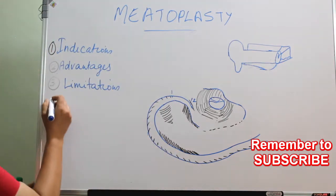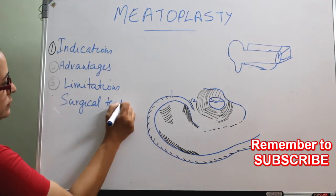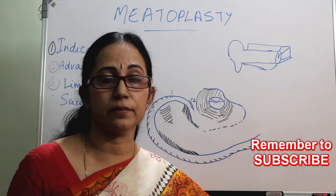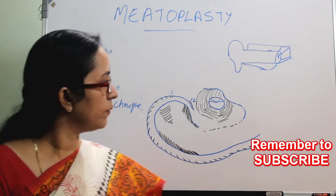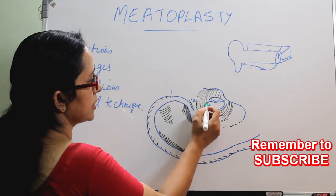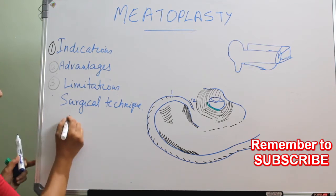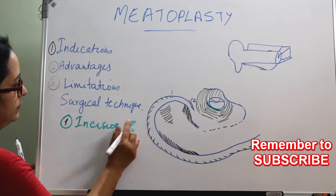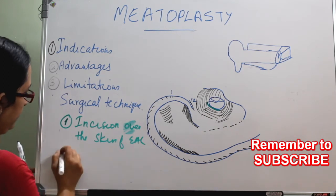There are many techniques of meatoplasty, but in all of them there are six basic steps. These six steps are done in all types of meatoplasty, whether endaural or post-aural approach. Step one is incising the skin of the external auditory canal — the external auditory canal skin incision.